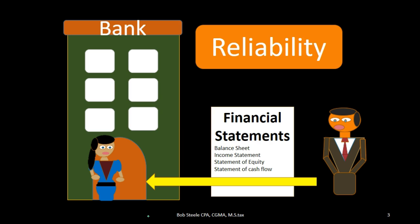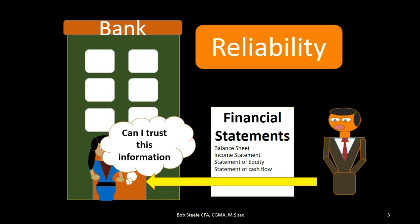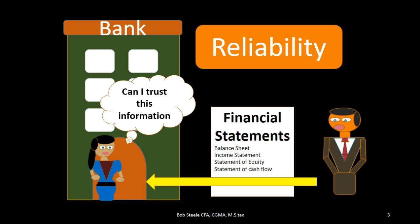But there are some other objectives we want to take a look at. The next objective is reliability. We can see our banker asking the question: can we trust these financial statements? We basically have pieces of paper with numbers on them — can we trust the numbers that are on this piece of paper?